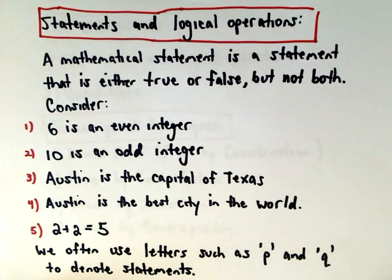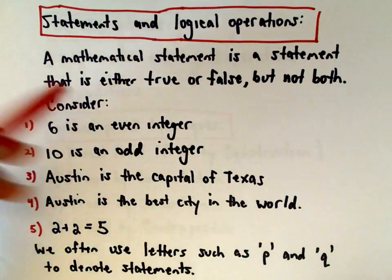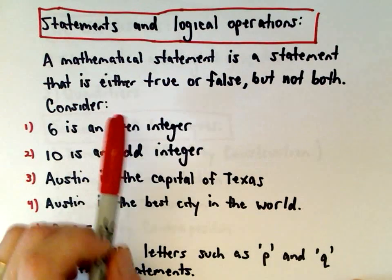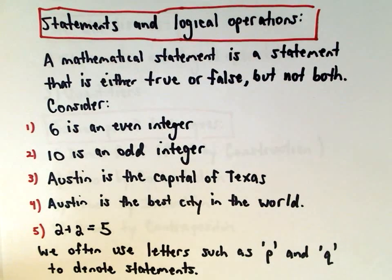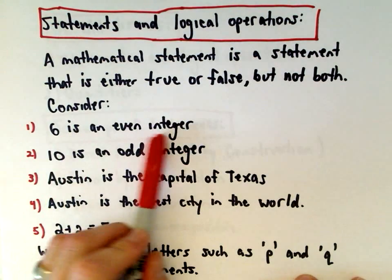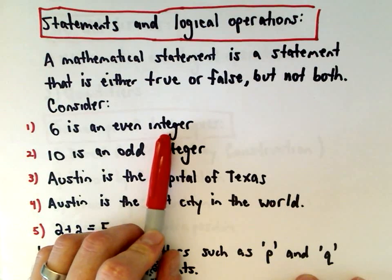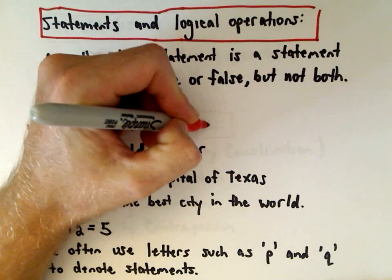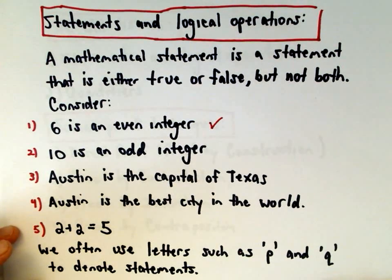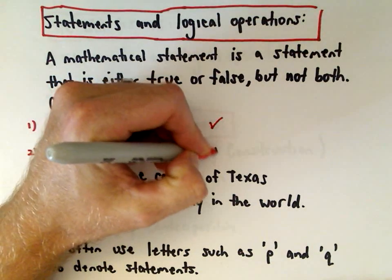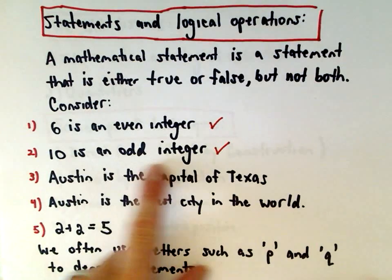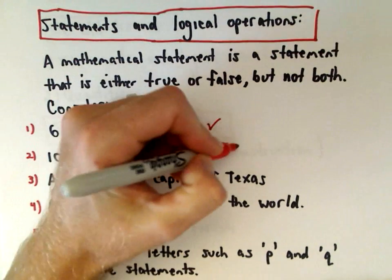A mathematical statement is a statement that's either true or false, but not both. Let's consider five examples. First, '6 is an even integer' — that has a truth value, and it's true, so it's a mathematical statement. Second, '10 is an odd integer' — that also has a truth value; it turns out to be false, since 10 is actually even, but it's still a mathematical statement because it is either true or false.